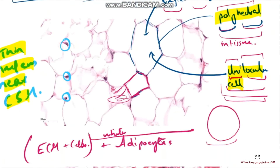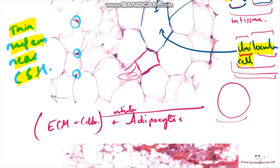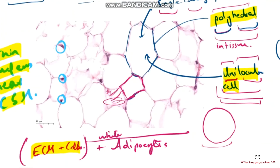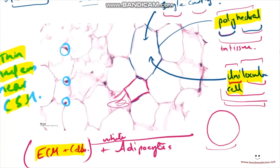So the three histological features of white adipocytes are: they are unilocular (single large cavity), they are polyhedral in tissue (spherical when isolated), and they have a thin nucleus near the cell surface membrane. Together, these white adipocytes and the surrounding connective tissue elements — the ECM and connective tissue cells — form the specialized connective tissue called white adipose tissue.